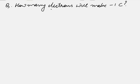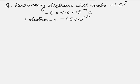How many electrons will make -1 coulomb? We know that an electron has a charge of -e, that is the minus fundamental unit of charge, which is -1.6 × 10^-19 coulomb. So one electron equals -1.6 × 10^-19 coulomb.